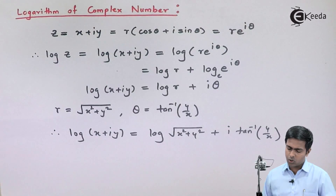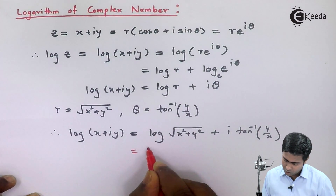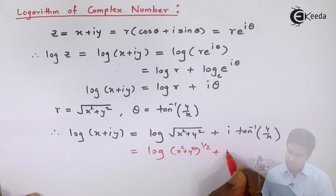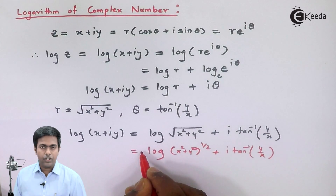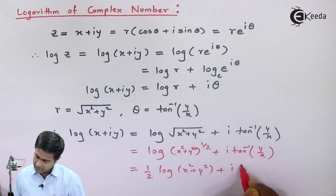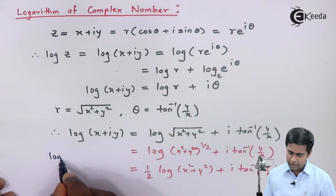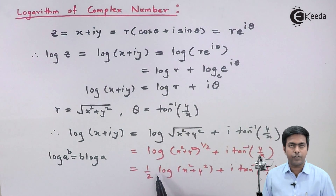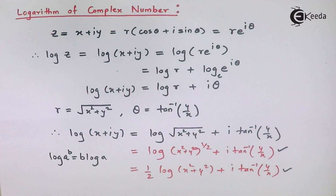We can also take the root outside the log. This root is nothing but a power of one half, so x squared plus y squared raised to one half. Using the formula log(a raised to b) = b log a, the one half comes out in front. So this becomes one half log of x squared plus y squared, plus i tan inverse of y by x. These are the two equivalent formulas to find the log of a complex number.